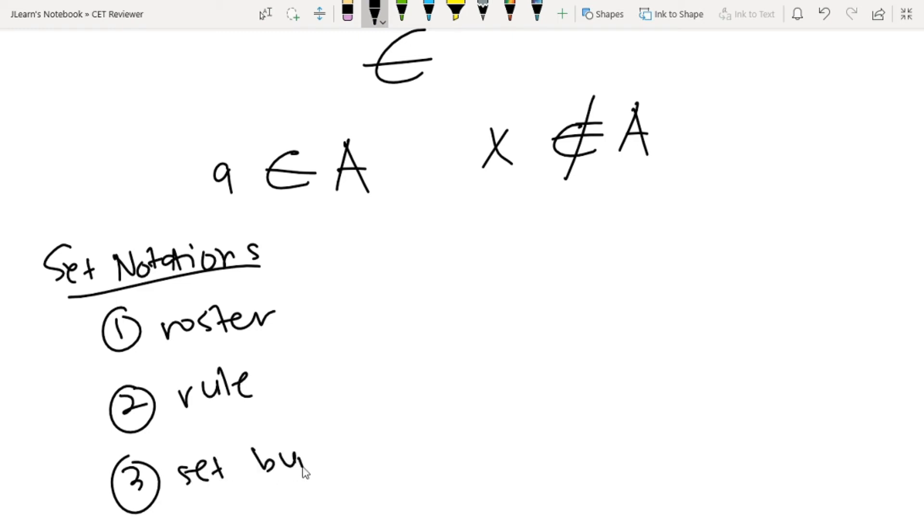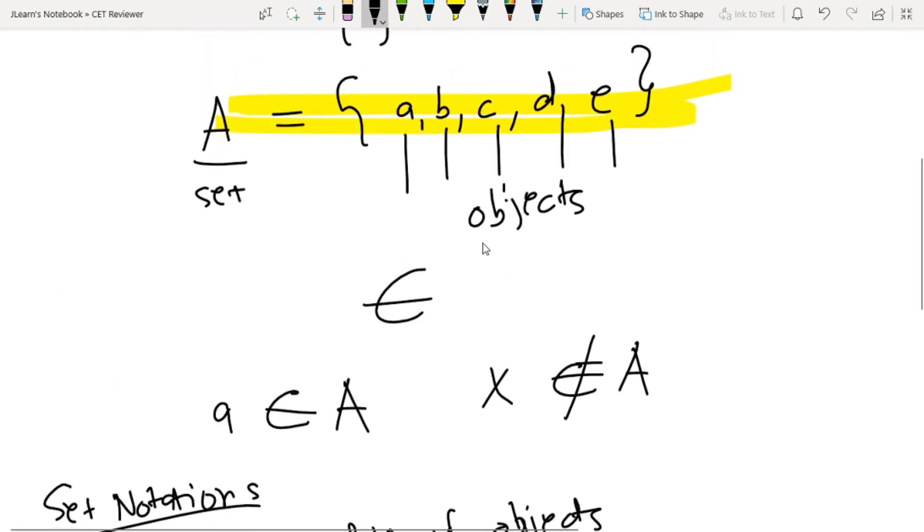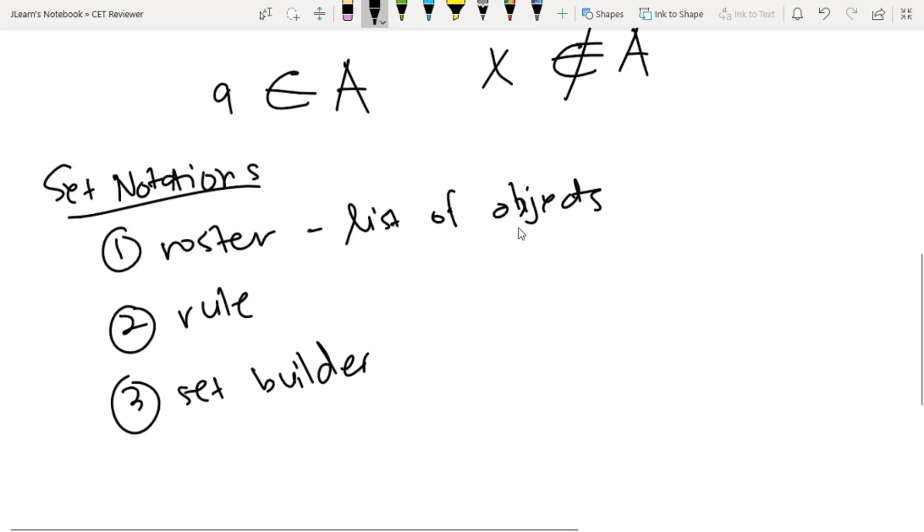The roster method is basically a list of objects. What we did earlier was the roster method. The rule method is basically defined using a property. For example, X is a set containing all vowels in English. That's the rule method, basically just a description of the set.